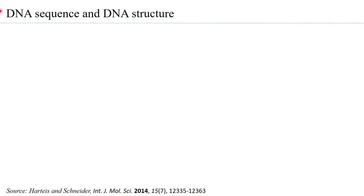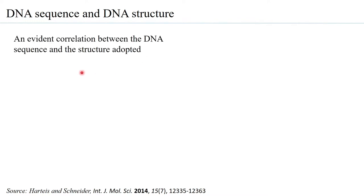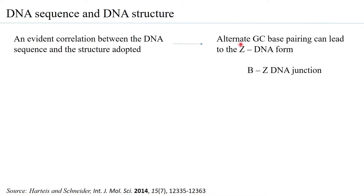There is an evident correlation between DNA sequence and the structure adopted by the DNA. For example, alternate GC base pairing can lead to Z-DNA formation. Within a single DNA molecule, one portion can be B-DNA and immediately after a junction can be Z-DNA. The change in conformation at that junction may itself be the site where a protein comes to interact. When B-DNA converts to Z-DNA, the minor and major groove dimensions change, altering the micro-environment and therefore the possible interactions.